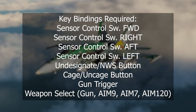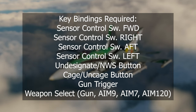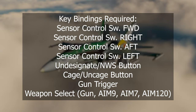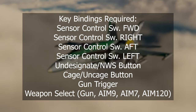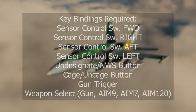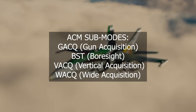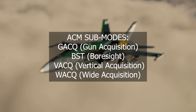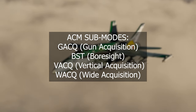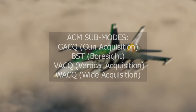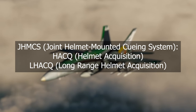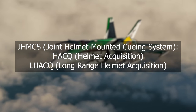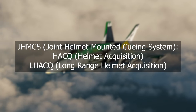The key bindings we're going to need are: the sensor control switch forward, right, aft, and left; the undesignate/nose wheel steering button; the cage/uncage button; and the gun trigger to fire the gun or missiles. The ACM sub-modes on the Hornet are gun acquisition, boresight, vertical acquisition, and wide acquisition — which has two modes: cage mode and uncage mode. If we have the JHMCS or joint helmet mounted cueing system, we also have helmet acquisition mode and long range helmet acquisition mode.